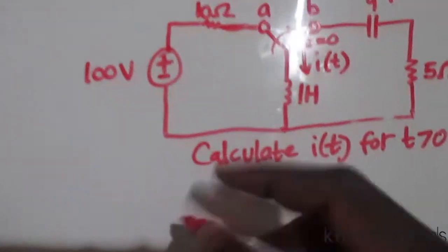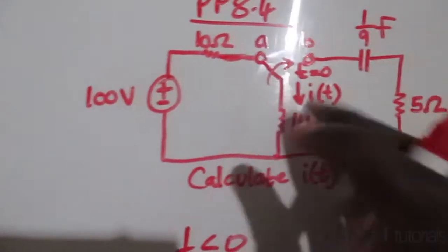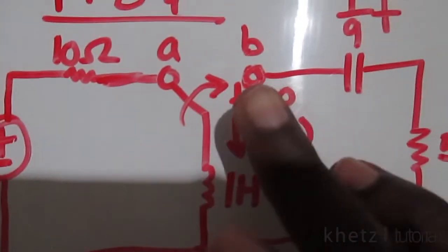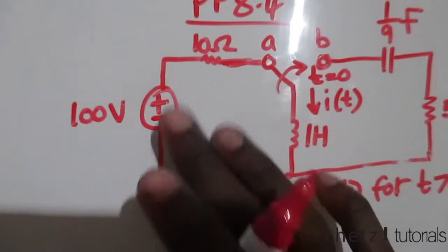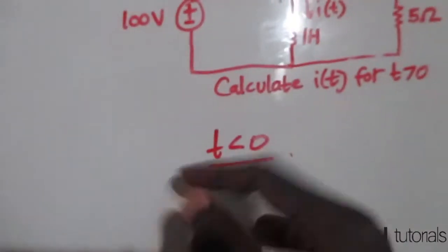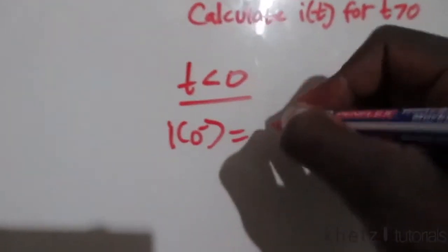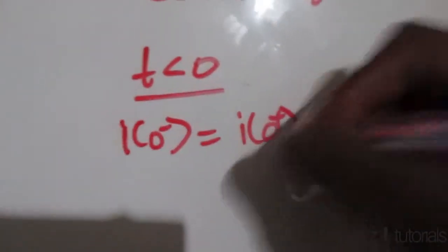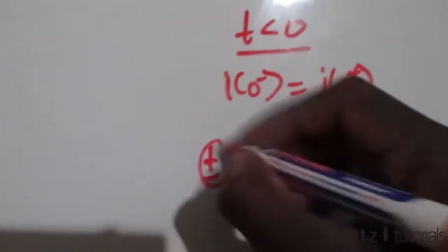Let's start for time less than zero. We have this circuit — the switching action takes place at t=0, where the switch moves from one point to the other. Before that, we assume the circuit has reached steady state, and at steady state the inductor is a short circuit. This helps us find i just before zero, which equals i just after zero because the inductor current doesn't change abruptly.